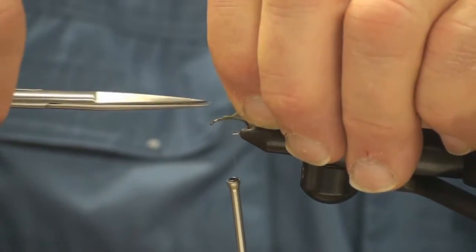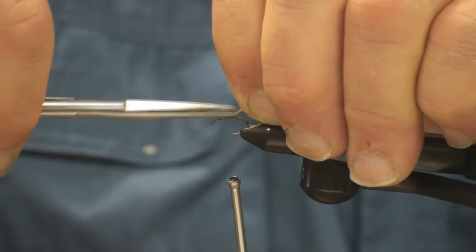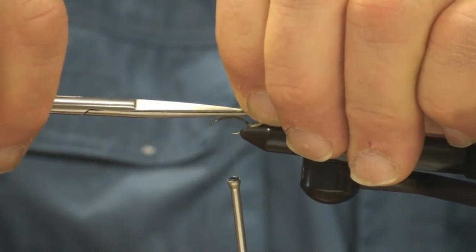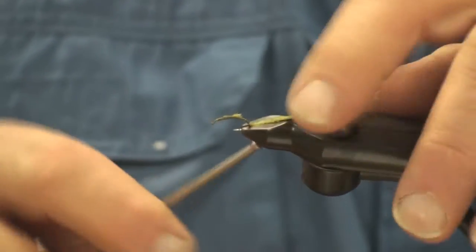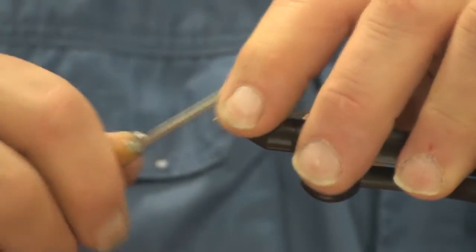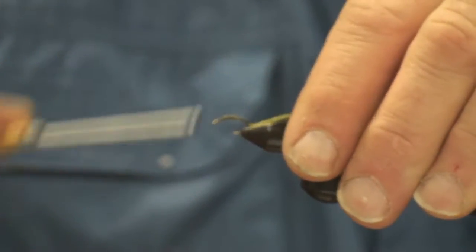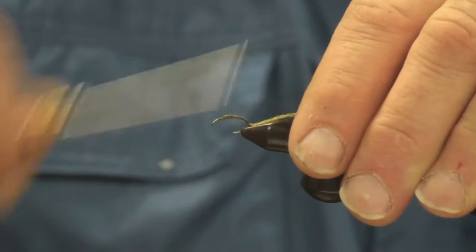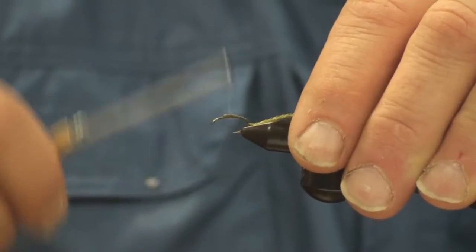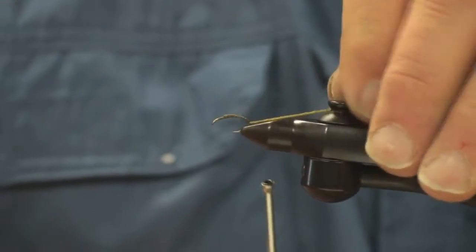Next I cut this parallel with the hook shank. This will give me a little bit of a taper. Cut your Antron to look like so, then just cover that with thread so there's no fiber sticking out. Proceed to return your thread back just in front of that Antron hump.